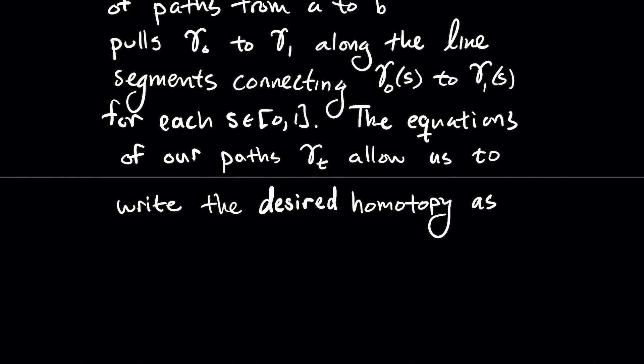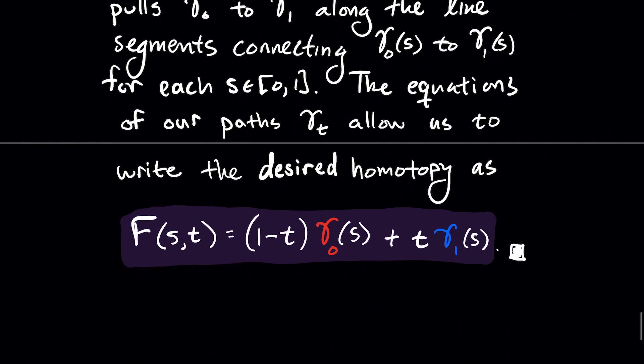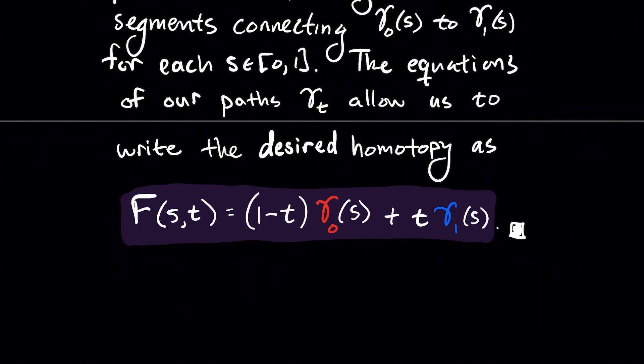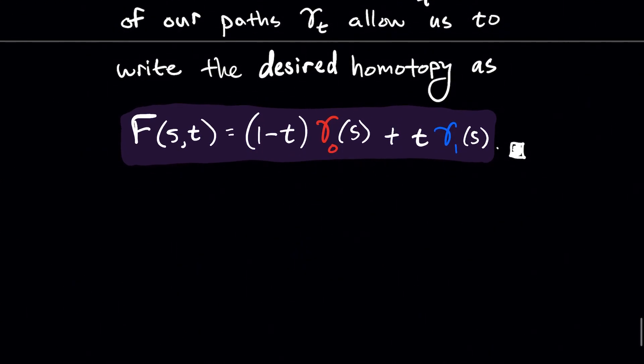And so the equations for our path, gamma t, in other words, again what comes from those line segments, the equation of the line segments, that's what allows us to write a formula for our desired homotopy. So once you've given what the family gamma t looks like, that is your homotopy. But maybe for practice writing it in this kind of function notation, capital F of (s,t) is going to be (1-t) times gamma naught of s plus t times gamma one of s. So we just demonstrated that any two paths in the complex plane that connect the same points, those should be homotopic.